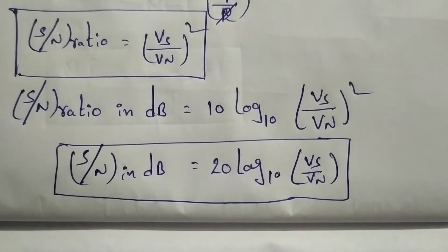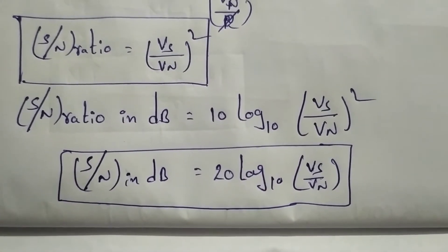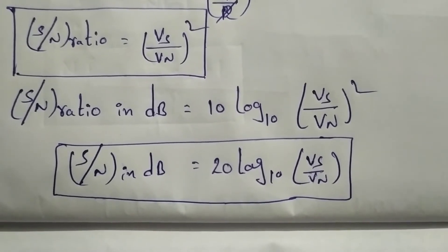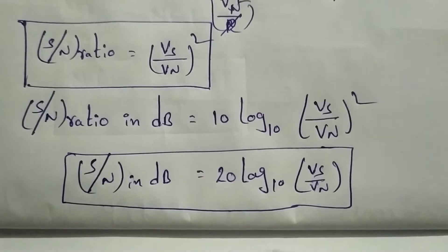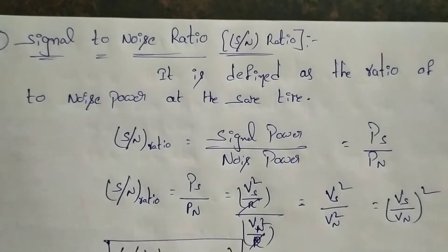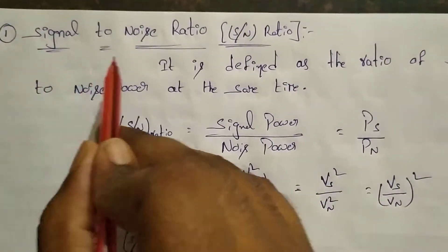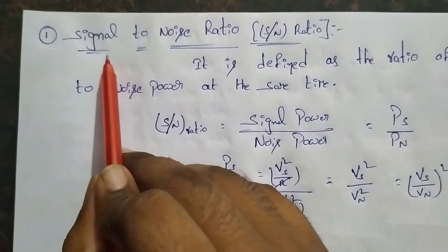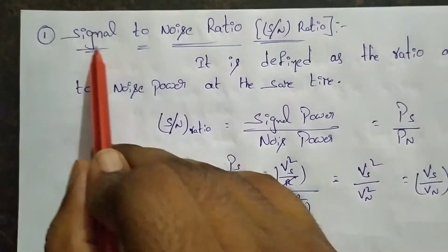So we are discussing the classification. Now we are discussing three definitions. The first one is Signal-to-Noise Ratio. Here is the signal-to-noise ratio. We are discussing the signal-to-noise ratio.